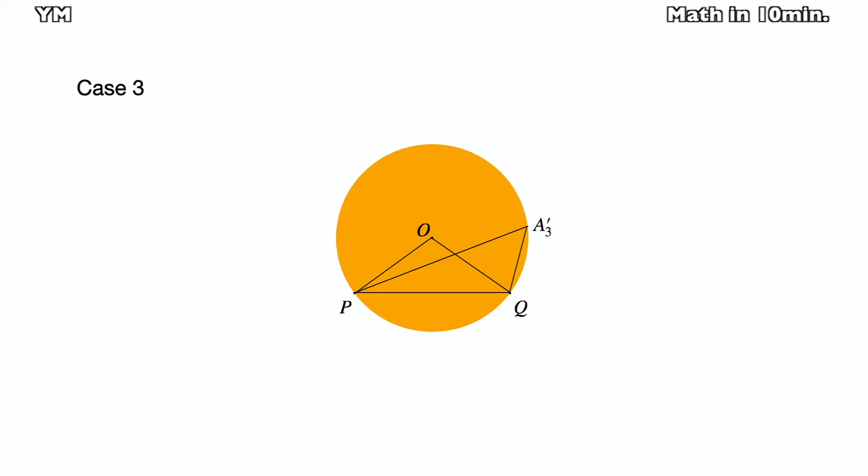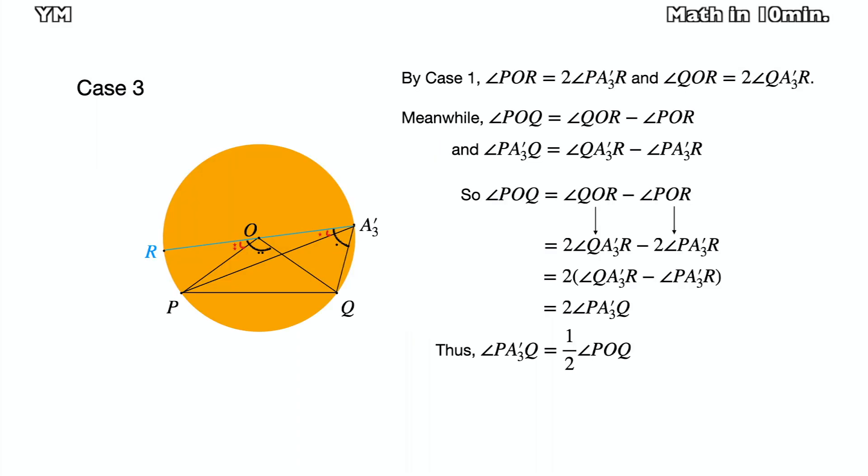The last case is that the center is outside from the inscribed angle. Like the previous case, I will draw a line which passes O and A3. By case 1,